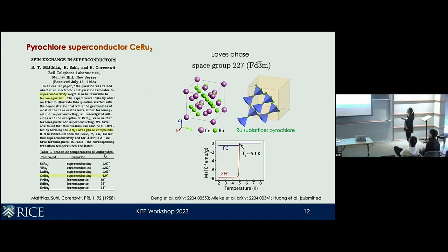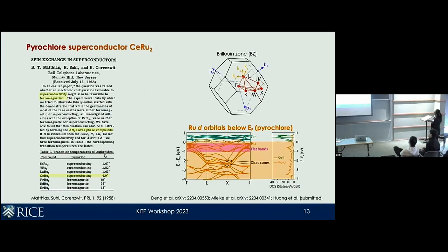The question arises: what kind of physics do we expect from these two sublattices? From DFT calculations, the cerium F states are mostly concentrated above the Fermi level. From the Fermi level down, it's mostly dominated by the ruthenium D overtones, which suggests that perhaps in this material we can find evidence of the pyrochlore lattice at play near the Fermi level.